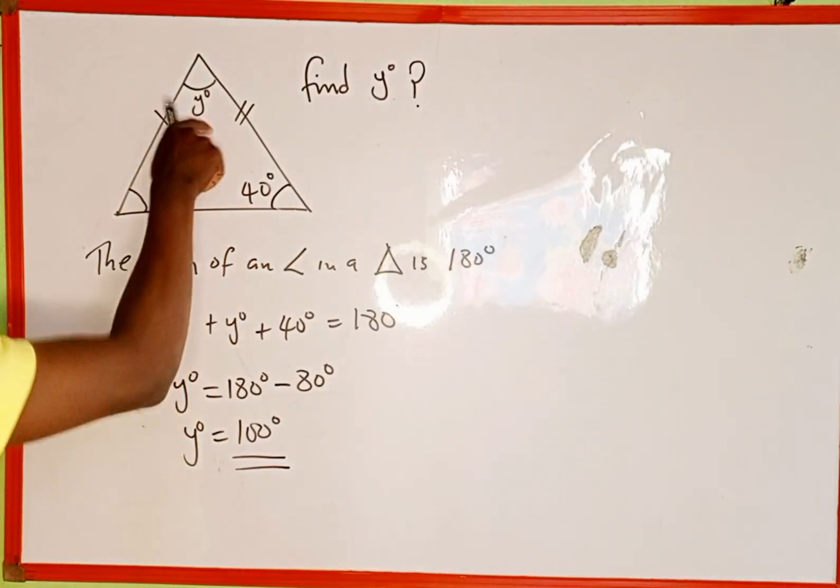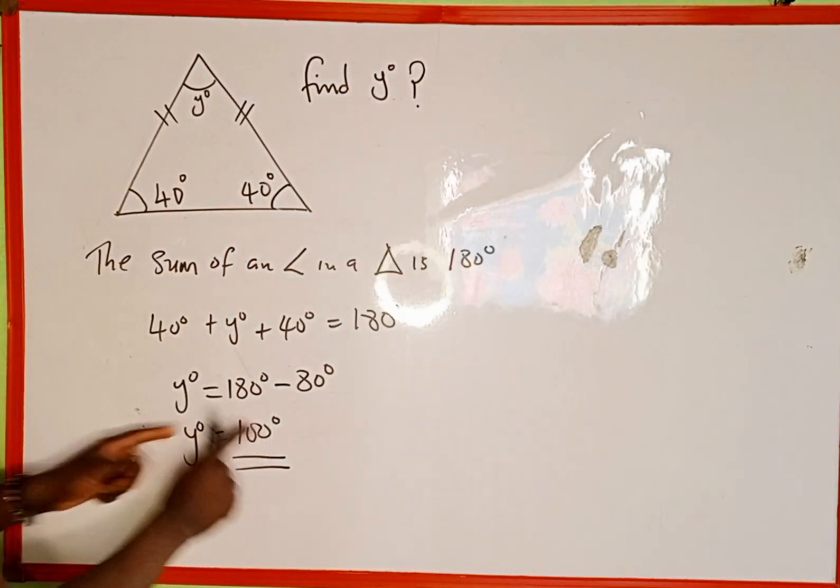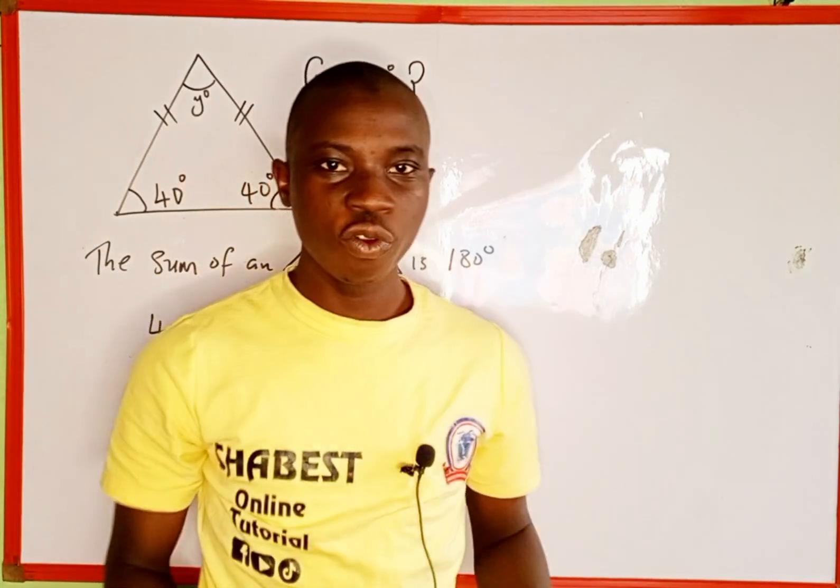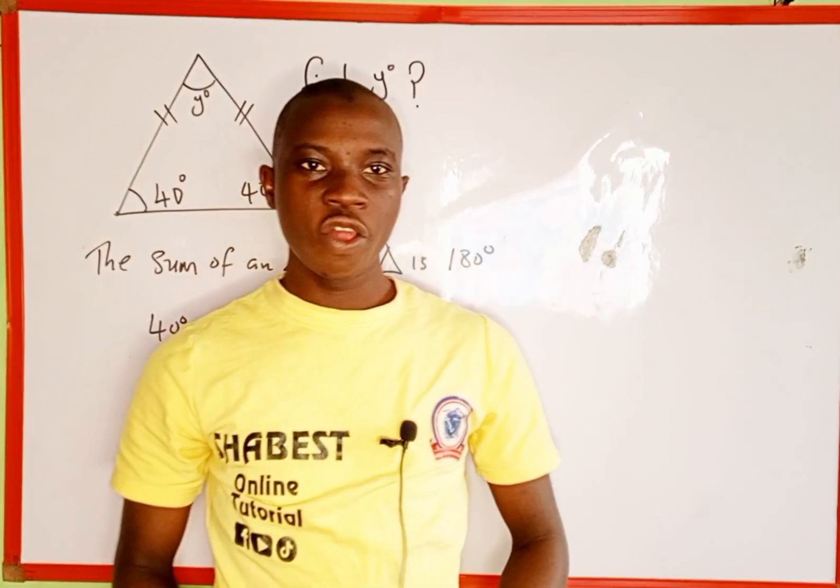So therefore the missing angle in this triangle, y degrees, is equal to 100 degrees. Thank you for watching and please follow and subscribe for more videos like this. Thanks.